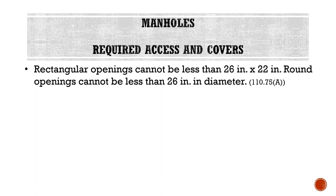Now talking about required access to manholes — specifically the opening dimensions and cover requirements. Rectangular openings cannot be less than 26 inches by 22 inches, and round openings cannot be less than 26 inches in diameter. So depending on which kind of cover it is — rectangular or round — we have some different sizing requirements.